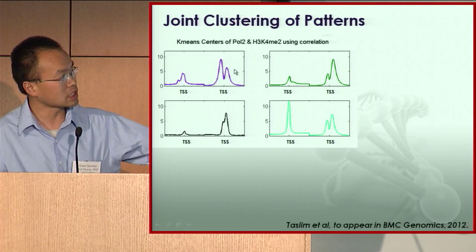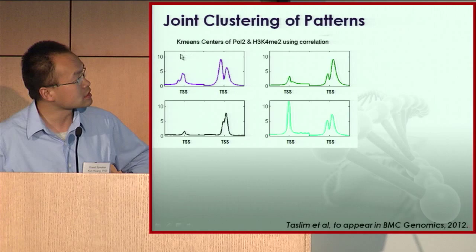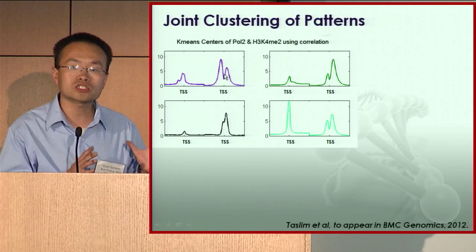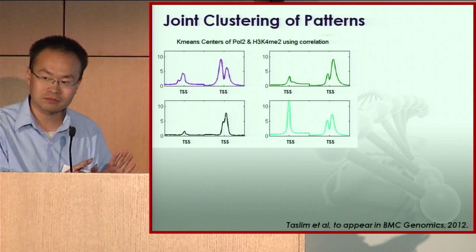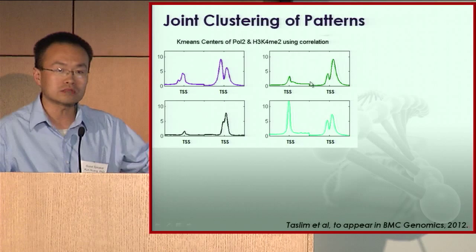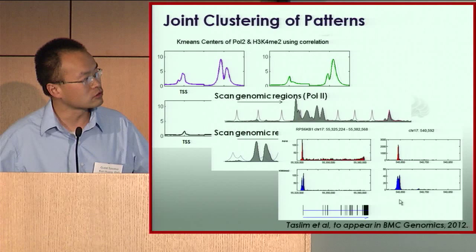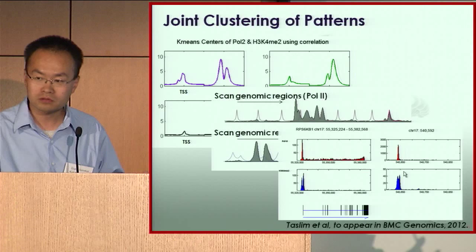We can start looking at the patterns of binding in detail. From breast cancer cell line ChIP-seq data — RNA polymerase II on one side, a histone mark on the other — using machine learning we found four major binding shapes around the transcription start site. Using 16,000 genes from RNA-seq as training data, we can learn those shapes, and then screen over the entire genome to identify unannotated regions with similar patterns, predicting potentially new promoter regions.